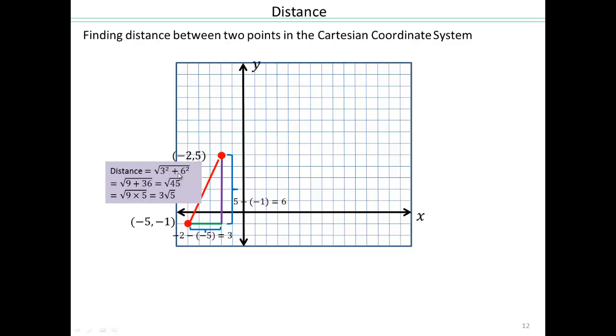Always remember, whatever answer you get, write it in the simplest form, reduced form. 45 is 9 times 5. Square root 9 is 3. So square root 45 will be reduced as 3 square root 5. Don't forget to do that one last step.